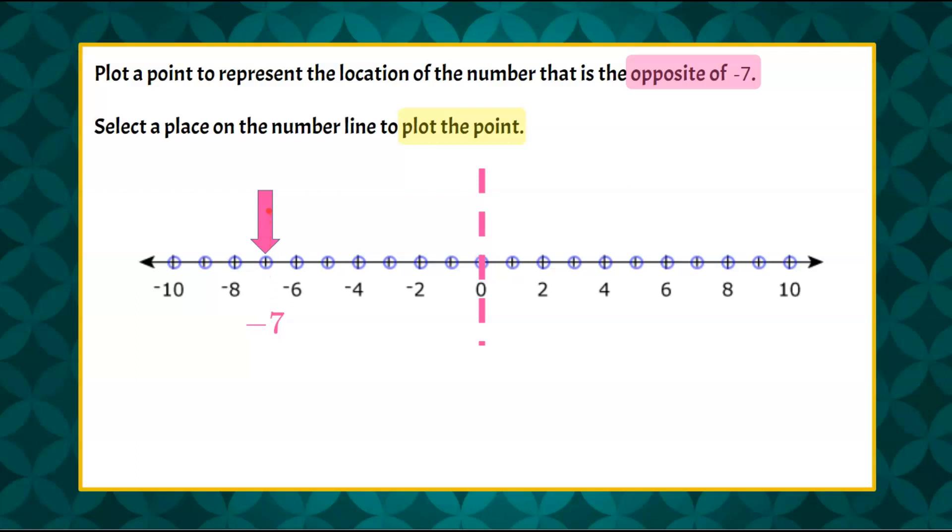So to find the opposite, we're going to go to 0, which is 7 units to 0, and then we need to travel that same distance to the other side of 0 on the number line. And that's where we find our opposite, and we plot our point, which is 7.